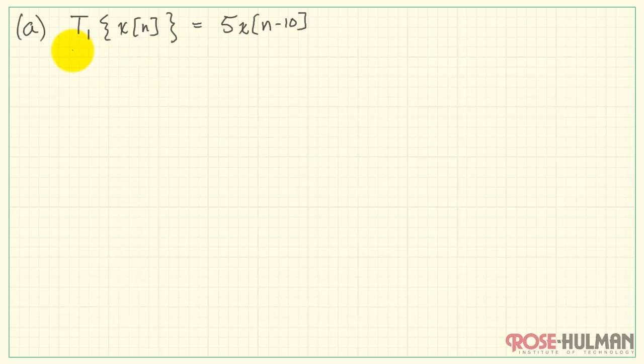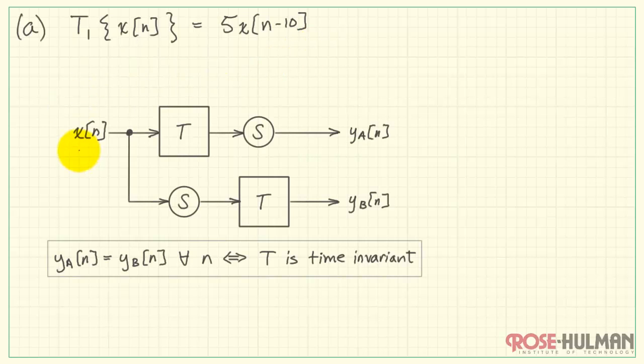Let's take a look at the detailed solution for part A. This is system T1, 5 times the delayed version of X by 10 samples.